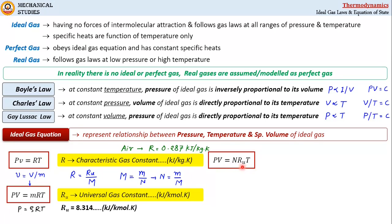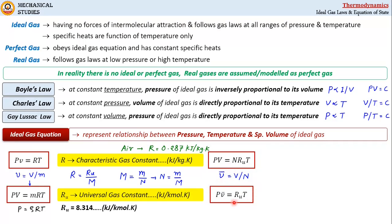Again, if we consider the molar specific volume of gas, represented by v-bar, as volume divided by number of moles (v-bar = V/N), and substitute V/N here, we get another form of the ideal gas equation: p·v-bar = Ru·T, where v-bar is molar specific volume or volume per unit mole and Ru is the universal gas constant.